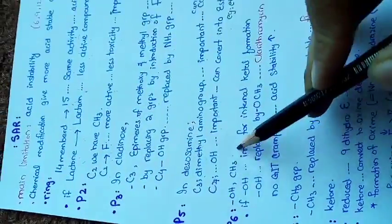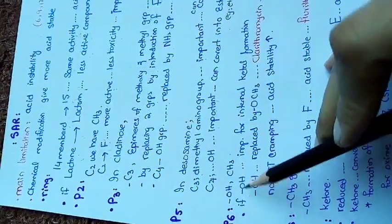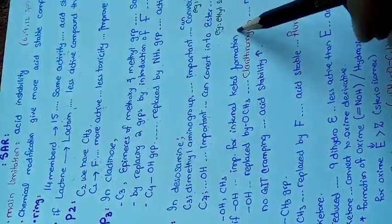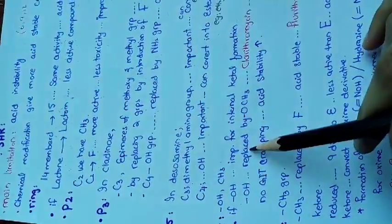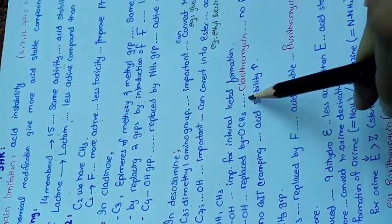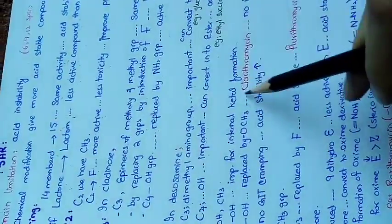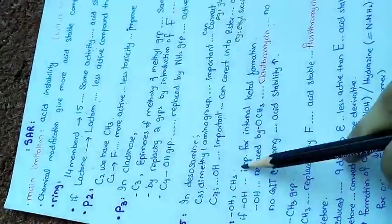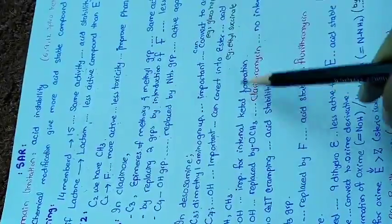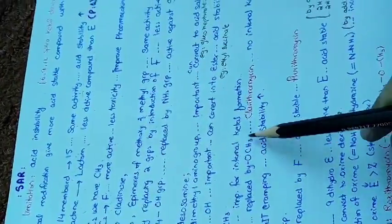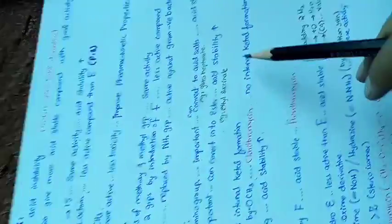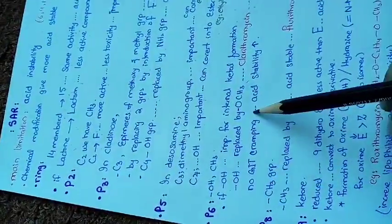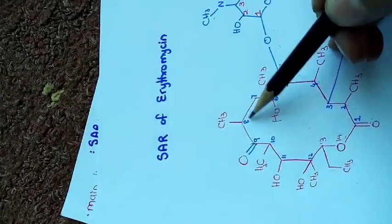At position 6 we have a methyl group and a hydroxyl group. The hydroxyl group at position 6 is very important for internal ketal formation. If this hydroxyl group is replaced by a methoxy group, the new compound formed is clarithromycin. Because the hydroxyl group formed the ketal group, replacing it with methoxy means there is no internal ketal formation, no GIT cramping, and the acid stability of the compound is increased.